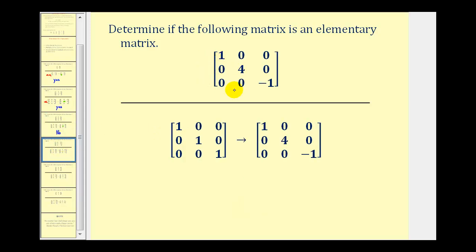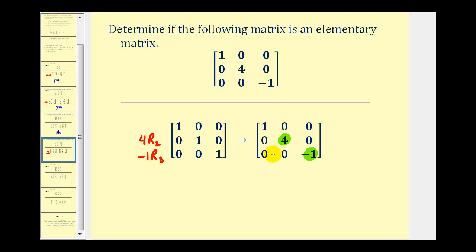Now we're given this three by three matrix. Starting with the three by three identity matrix, we want to see if we can perform one row operation to obtain the given matrix. Notice this matrix has been changed two ways: this one is now four, and this one is now negative one. The only way to obtain the given matrix would be to replace row two with four times row two, and replace row three with negative one times row three. This would require two elementary row operations, and since we can only perform one, the answer is no — this is not an elementary matrix.